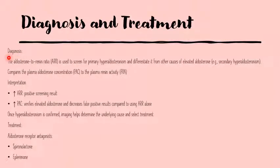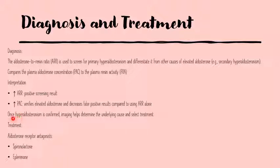Diagnosis involves measuring plasma aldosterone concentration and plasma renin activity to derive the aldosterone-to-renin ratio. An elevated ratio indicates a positive screening result for primary hyperaldosteronism. To avoid false positives, this is confirmed with plasma aldosterone concentration. Once hyperaldosteronism is confirmed, imaging is used to determine the underlying cause and select treatment. Treatment involves using aldosterone receptor antagonists — either spironolactone or eplerenone.